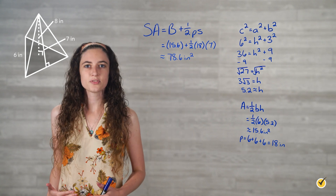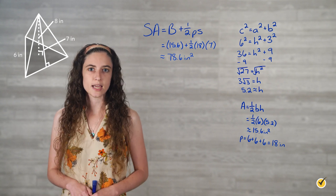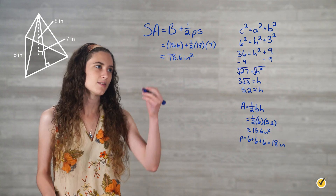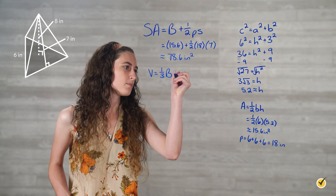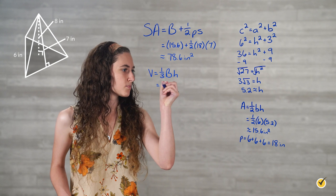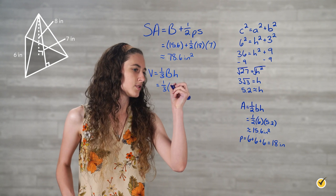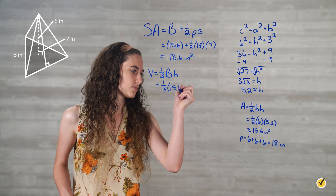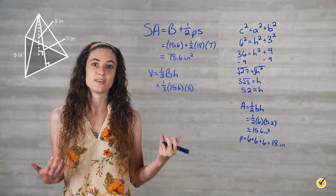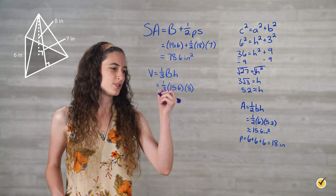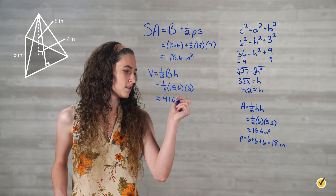To find the volume of the triangular pyramid, we need the area of the base, big B, and the height of the pyramid, which is 8 inches. Volume equals one-third times the area of the base times the height, so one-third times 15.6 times 8. Calculating this gives us approximately 41.6 cubic inches.